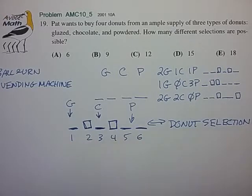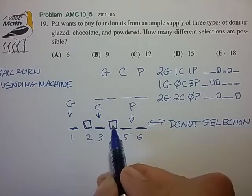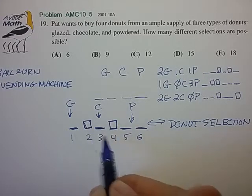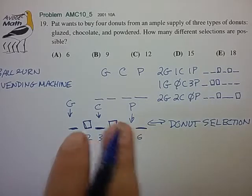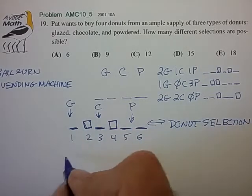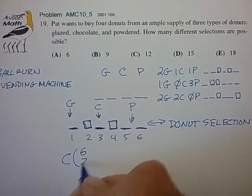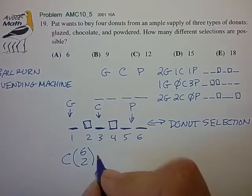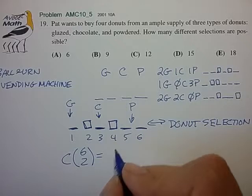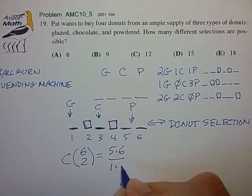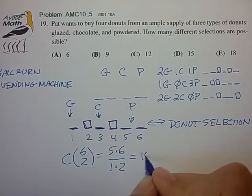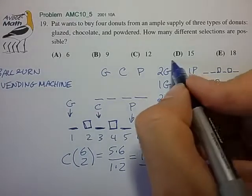And that we can recognize as a simple combinatorics problem. Essentially, we have two items that we have to choose between six possible locations, and we don't care about the order of the items once they're placed. So that just comes down to the combination of six items chosen two at a time. And we know from our combinatorics mathematics that works out to 5 times 6 divided by 1 times 2 for a total of 15, which is choice D.